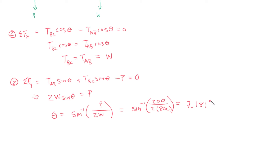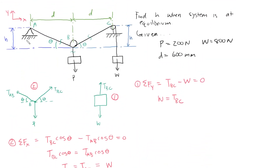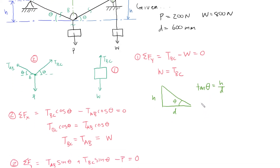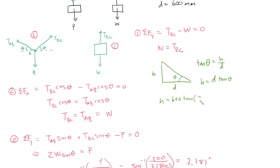Now that we have angle theta, we can find h using simple trig. We have this right triangle with height H, base D, and angle theta. The tangent of theta equals H over D, which implies H equals D·tan(theta). D is 600 millimeters, so H equals 600 times tangent of 7.181 degrees, which gives H equals 75.593 millimeters.